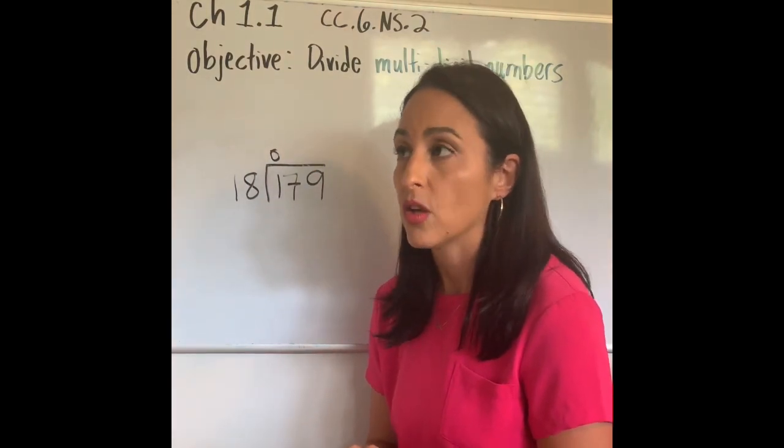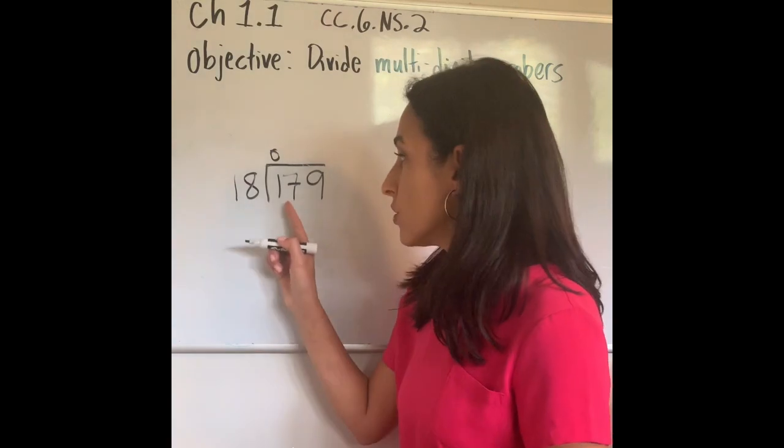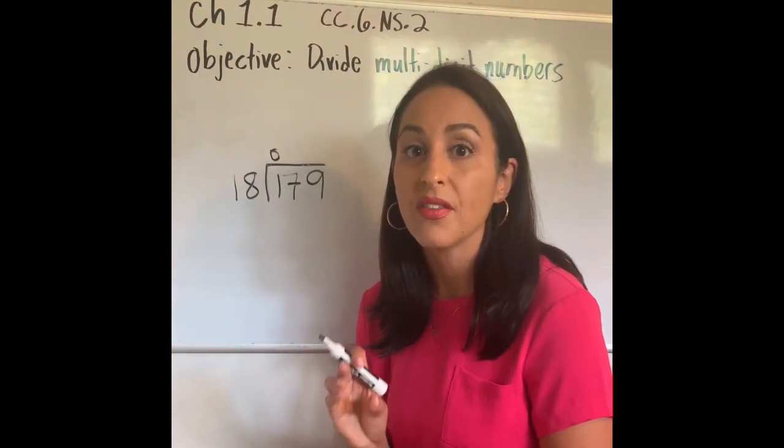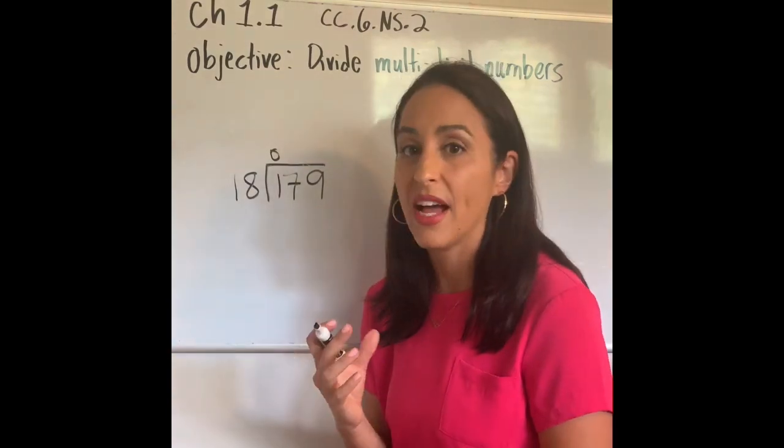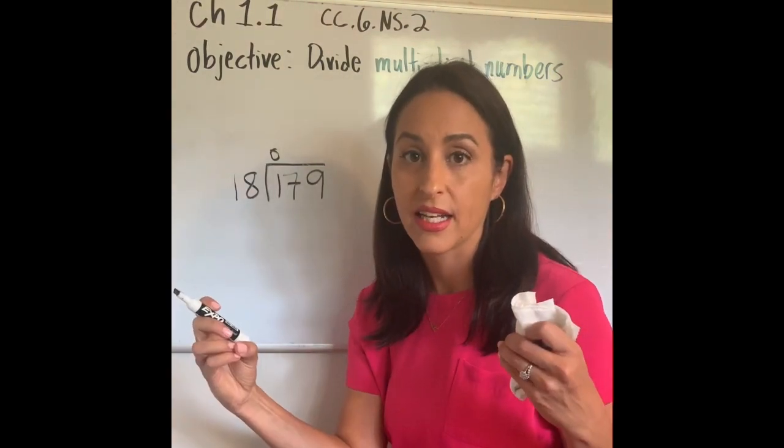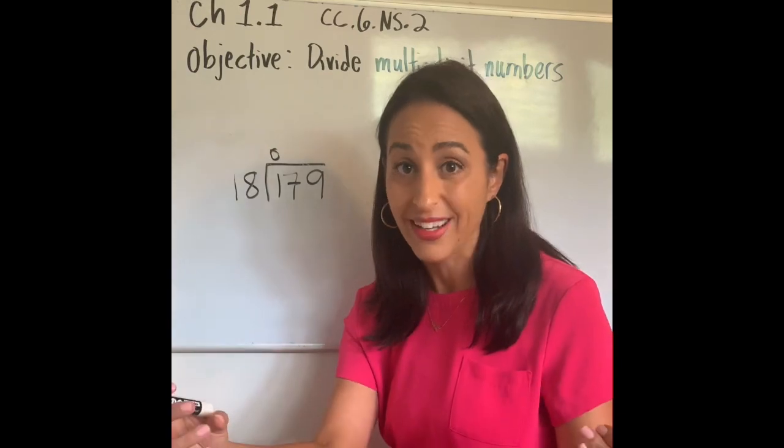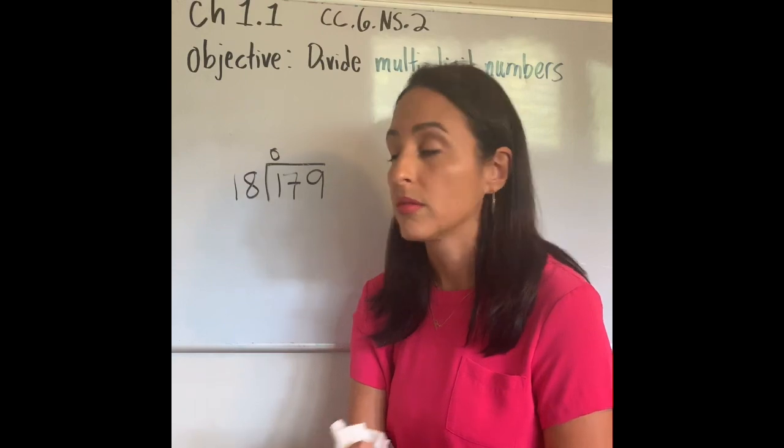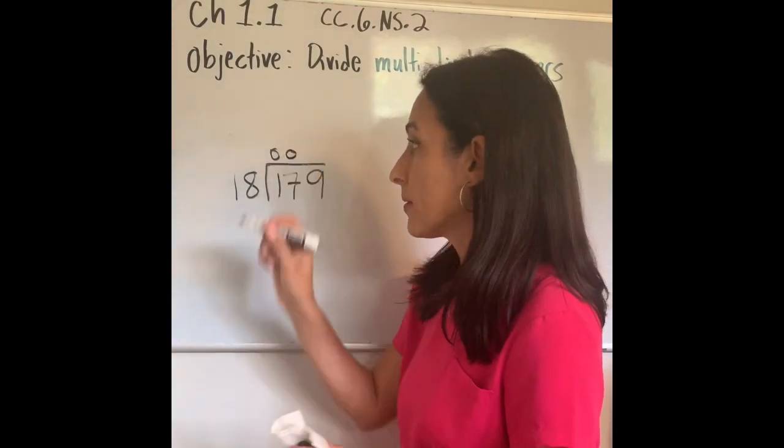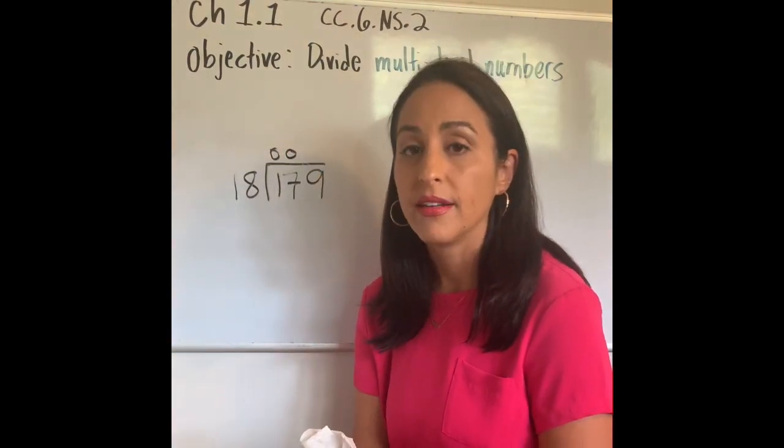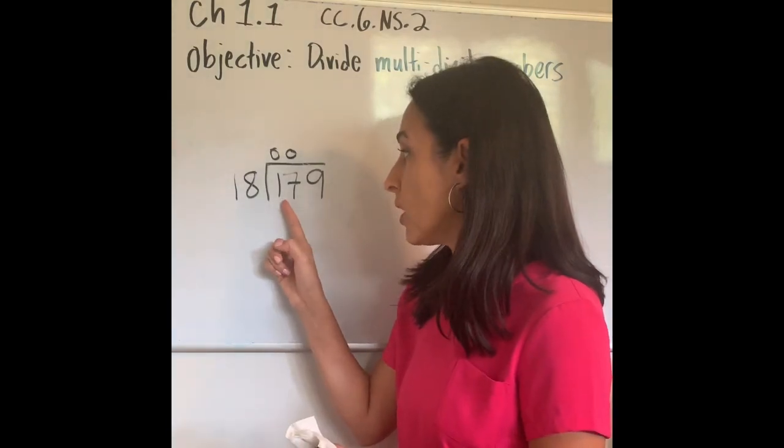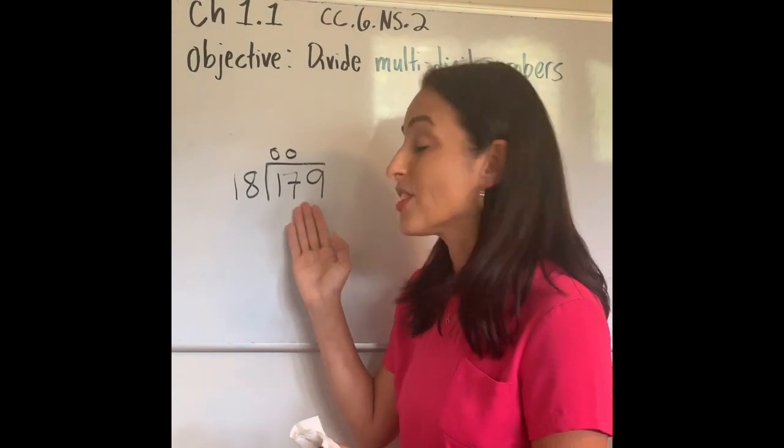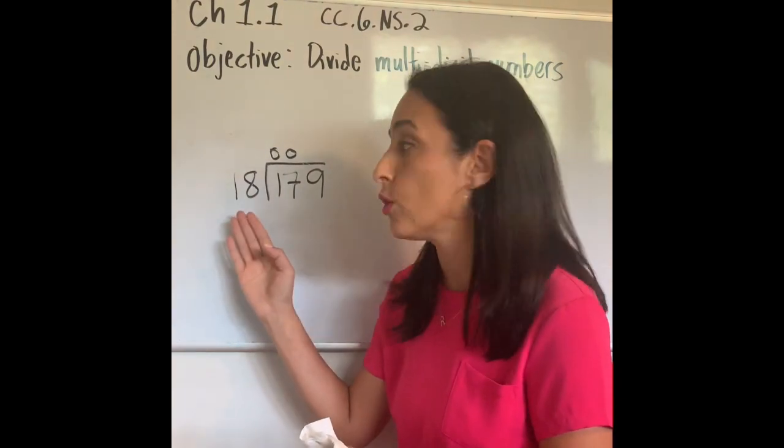17 divided by 18—if I have 17 candies, can I divide it amongst 18 friends? No, I can't; I'll be short. So I'm gonna have to place another 0 up here. Can't do it. Now I'm going to use all three digits. 179 divided by 18. Wow, that's a large number. I have no clue how many times 18 can go into 179.